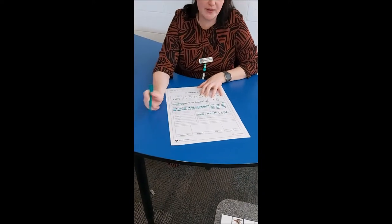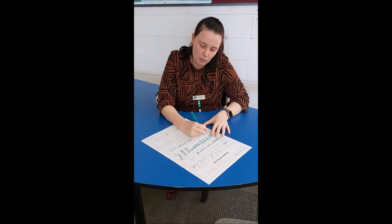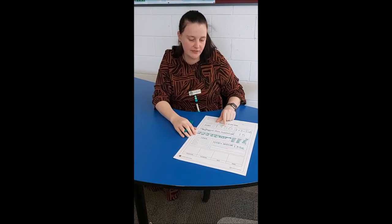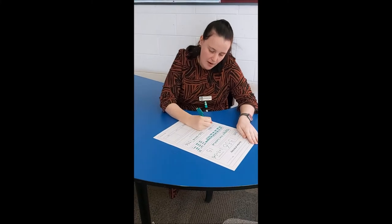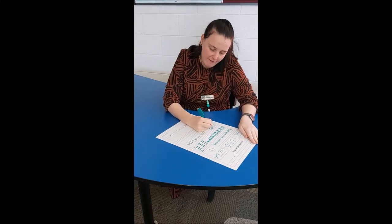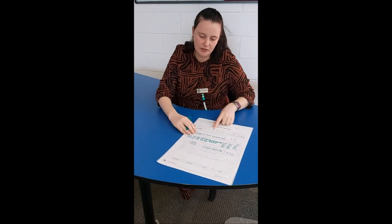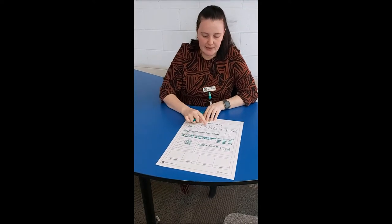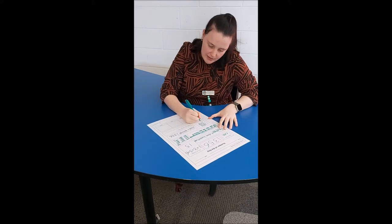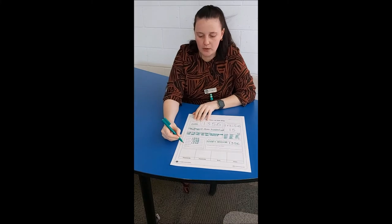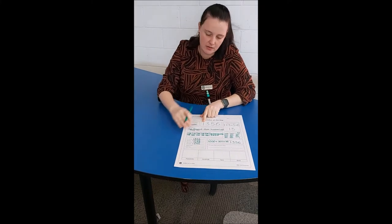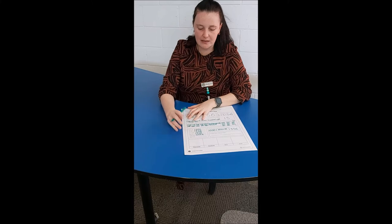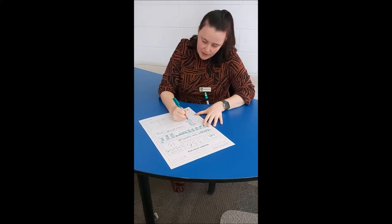Now I need to add and subtract from this number. Ten more is 1,366. Ten less than 1,356 — remember, we always come back to this number — would be 1,346. One hundred more: I look at my hundreds column, so it would be 1,456. One hundred less, still looking at the hundreds column, would be 1,256. One thousand more: I look at my thousands column, so it would be 2,356. And 1,000 less would be 356.